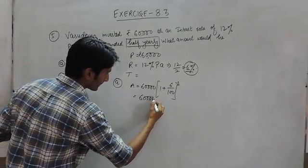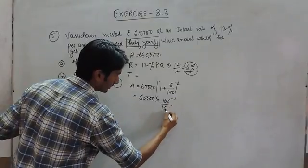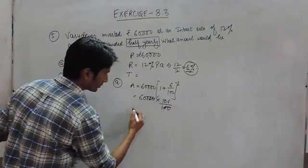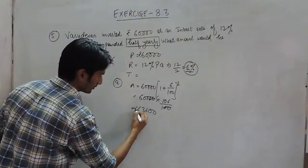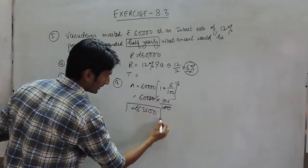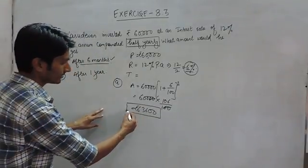So solving this, this is 106 upon 100. So canceling this out, the amount after 6 months will be this much.